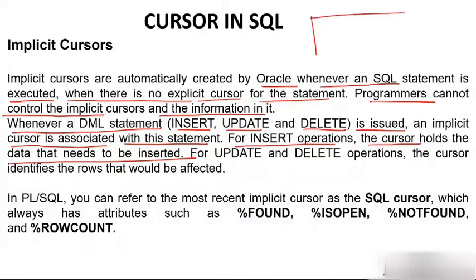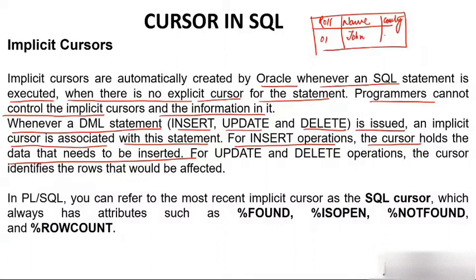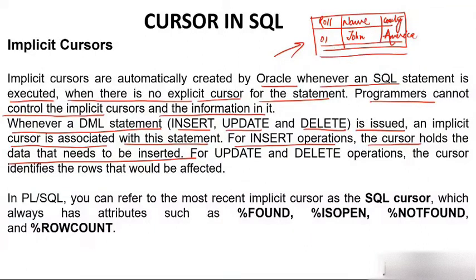For example, suppose there is a table having three columns: role, name, and country. I want to enter role number 1, name John, and country America. I need to hold this information somewhere, and for insert operation, the cursor holds that data. For update and delete operations, the cursor identifies the rows that would be affected. Suppose there are multiple rows in a table — the cursor will point to the row that needs to be updated or deleted.